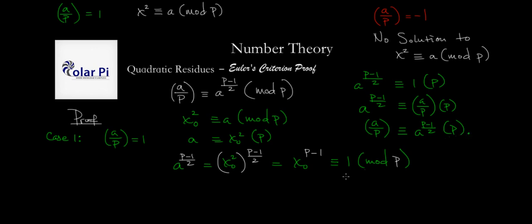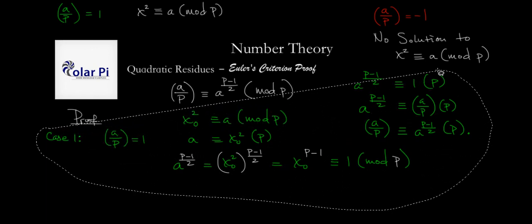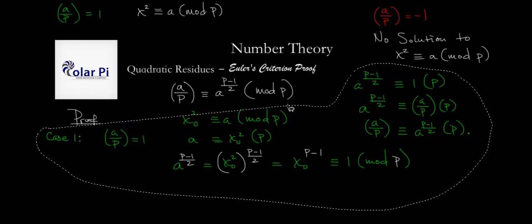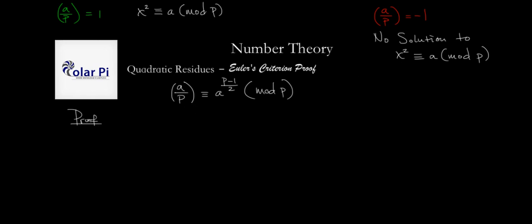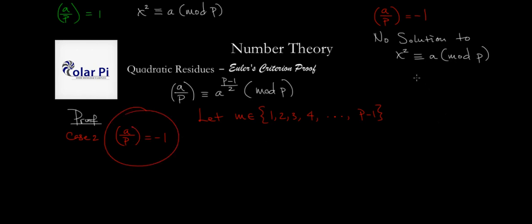And there it is — this completes Case 1 and Part 1. Case 2, which is Part 2 to come, is when a over p is negative 1. In Case 2, a over p equals negative 1, meaning a is a quadratic non-residue mod p. Remember, this means that the congruence equation x squared ≡ a mod p has no solution — very important to keep that in mind because it will come into play shortly.